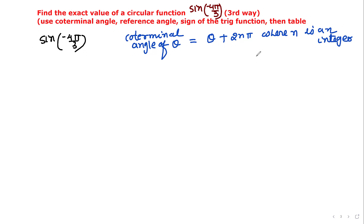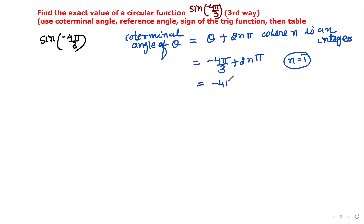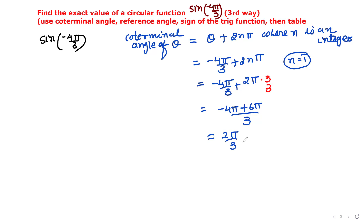There are many different coterminal angles; we're looking for the least positive one. Plugging in θ = -4π/3: the coterminal angle equals -4π/3 + 2nπ. We want the result between 0 and 2π, so choose n = 1. That gives -4π/3 + 2π. Finding the LCD by multiplying top and bottom by 3: (-4π + 6π)/3 = 2π/3. Since 2π/3 is between 0 and 2π, the least positive coterminal angle for -4π/3 is 2π/3.